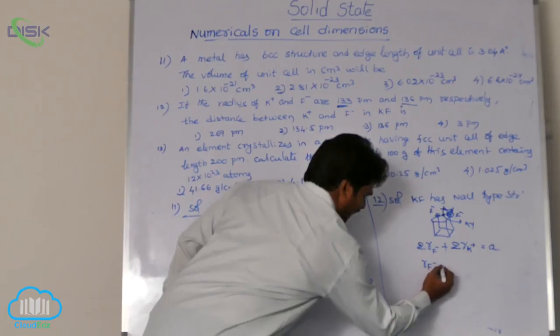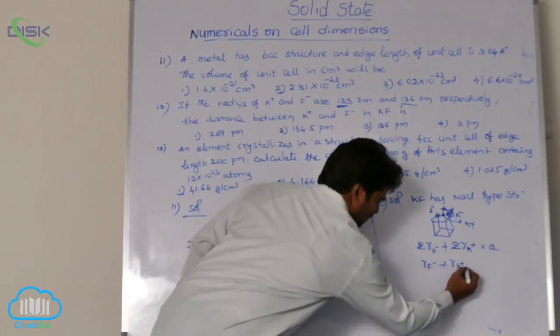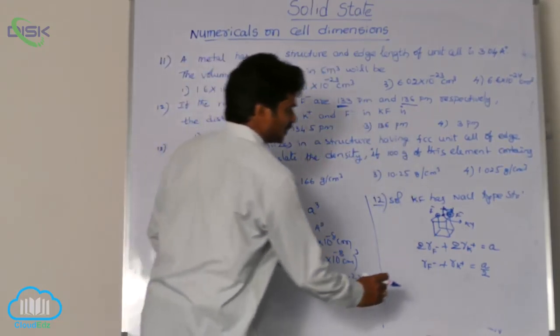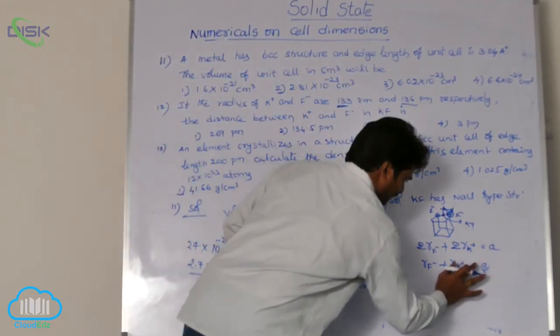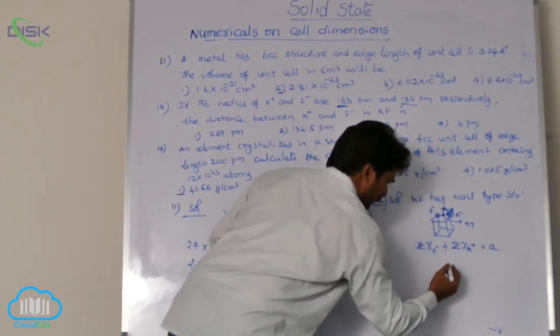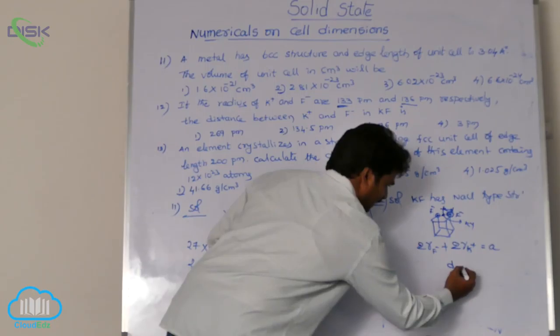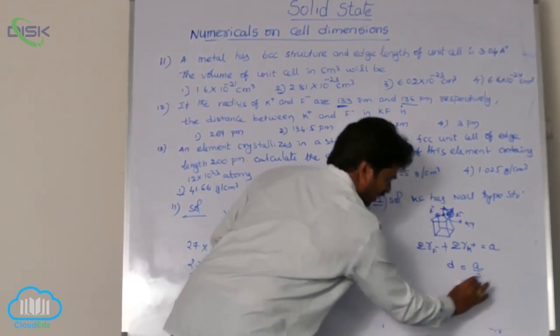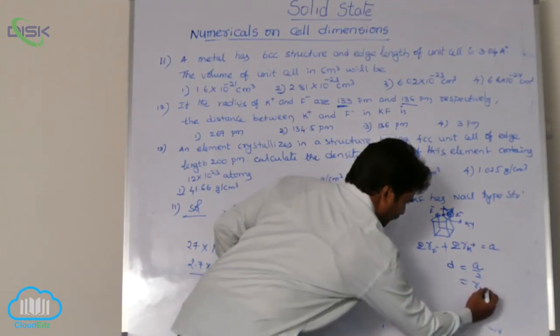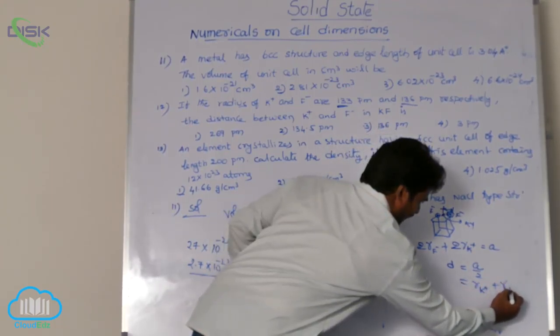Radius of fluoride ion plus radius of potassium ion equals to A by 2. So, here, the distance between, let it be distance between the potassium and sodium ion be D. D equal to A by 2 formula. But, A by 2 means radius of cation plus radius of anion.